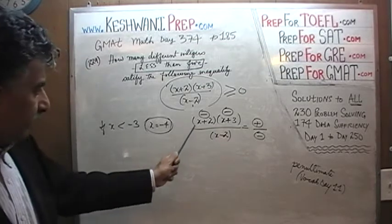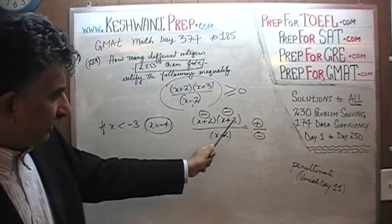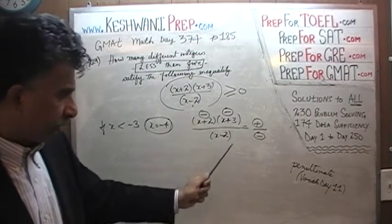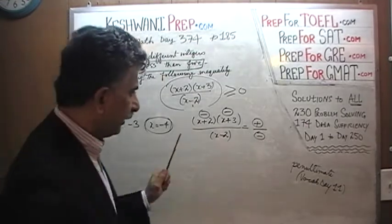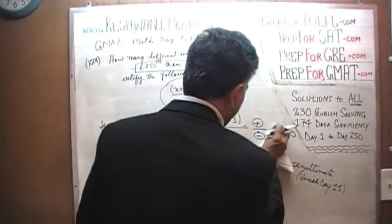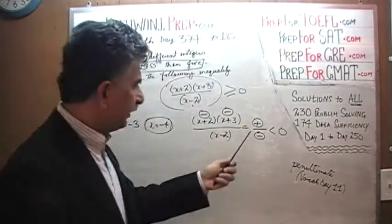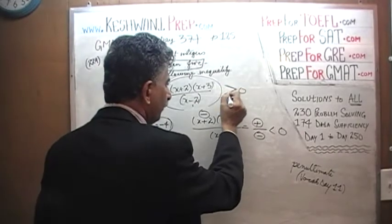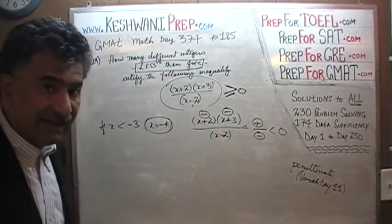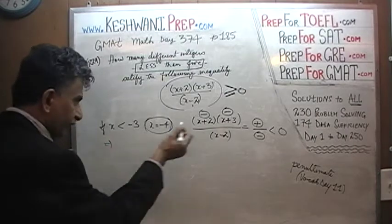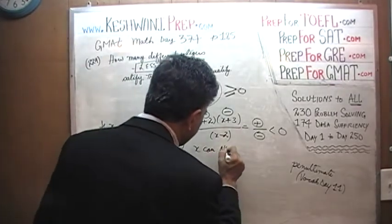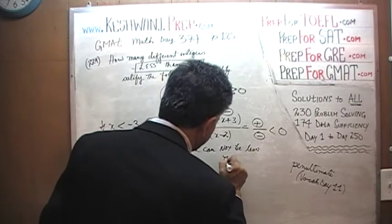If x is less than negative 3, then x+2 is negative, and something less than negative 3 plus positive 3 is also negative, so negative times negative is positive — the numerator is a positive quantity. But the denominator will be negative. Positive divided by negative is negative, which is less than zero. Since the expression must be positive or equal to zero, x cannot be less than negative 3.